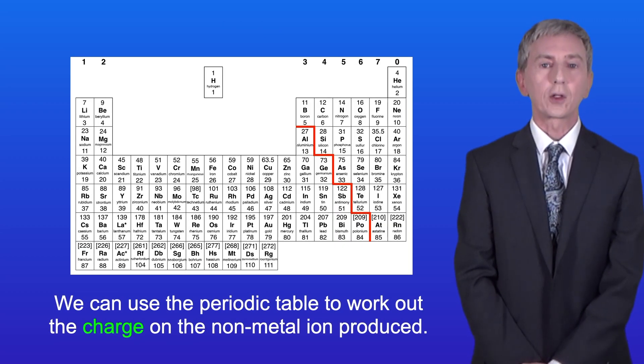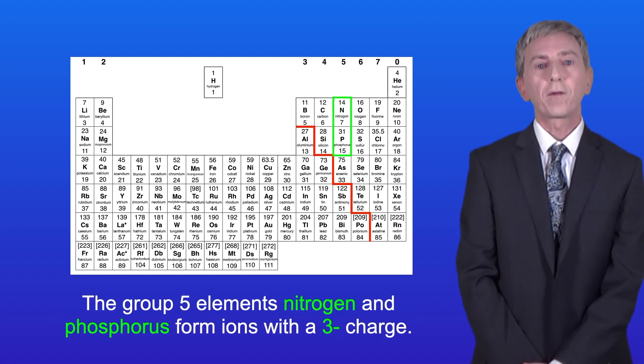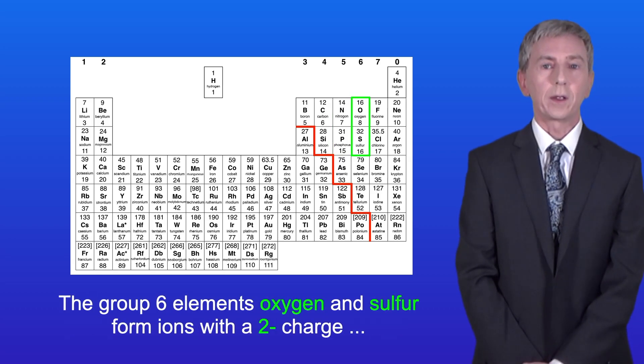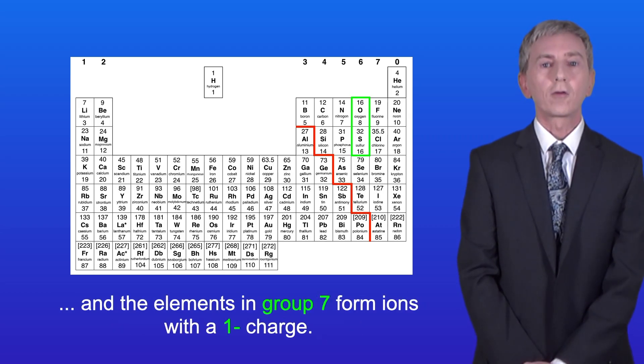Again we can use the periodic table to work out the charge on the non-metal ion produced. The group 5 elements nitrogen and phosphorus form ions with a 3- charge. The group 6 elements oxygen and sulfur form ions with a 2- charge. And the elements in group 7 form ions with a 1- charge.